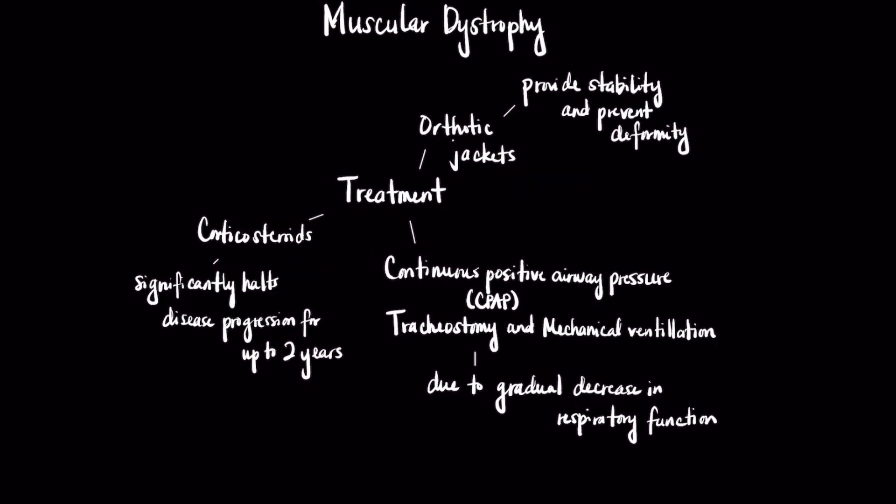For the treatment of muscular dystrophy, orthotic jackets are used to stabilize the trunk of the patient to provide stability and prevent deformity, as the disease often leads to weakness and spinal collapse. CPAP, tracheostomy, or mechanical ventilation are eventually used for patients advancing in the disease process due to the gradual decrease in respiratory function. Corticosteroids are used for the purpose of delaying disease progression for up to two years.